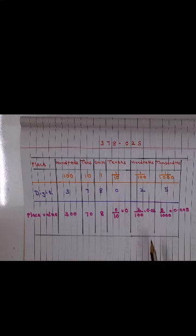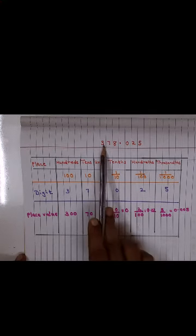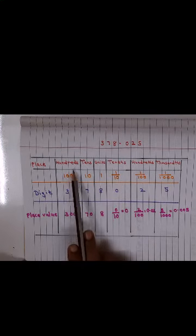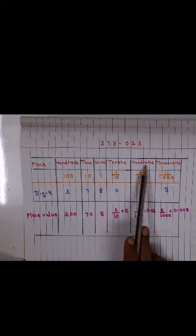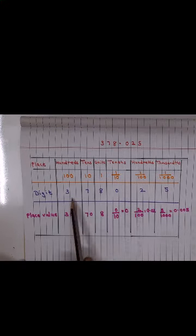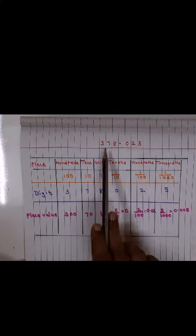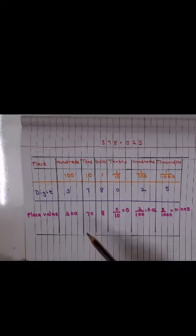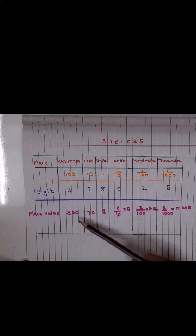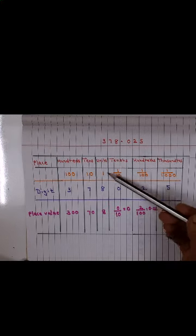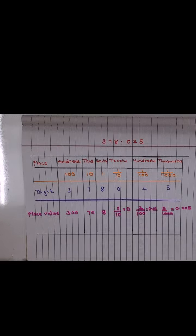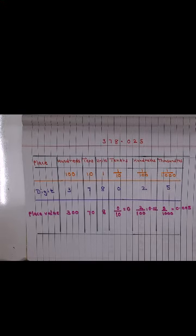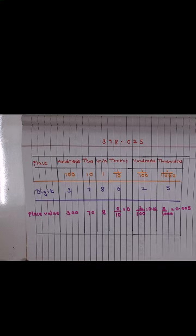We have the number over here 378.025. Now hundreds, tens, units. So 3 is in the hundreds place, 7 is in the tens place, and 8 is in the units place. The value you know children, it is 300 here, it is 70, and in the units it is 8. Now the mistake lies here, here is where you are getting confused and you all are making a mistake.